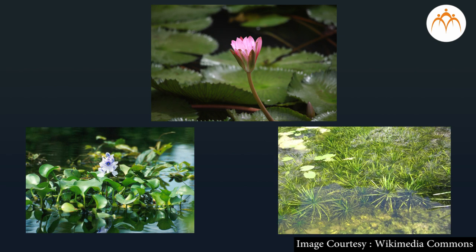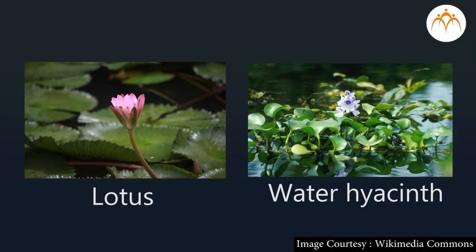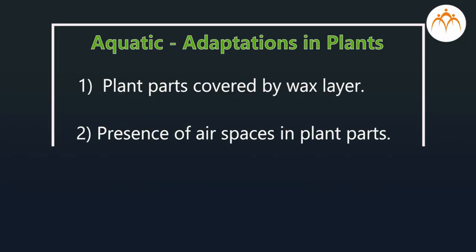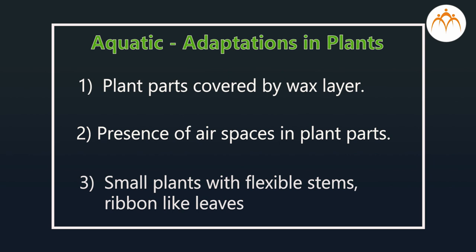Now, have a look at some aquatic plants like lotus, water hyacinth, hydrilla, etc. Lotus and hyacinth float on water whereas hydrilla is submerged in the water. Most of these aquatic plants have a layer of wax on their leaves and stems. Petioles of these plants appear like a sponge because of air spaces, which helps plants to float in water by storing air. Aquatic plants are smaller in size and have ribbon-like leaves and flexible stems, so they can withstand currents of water.